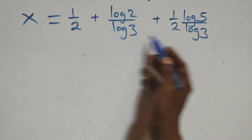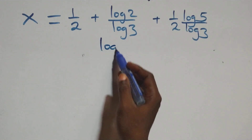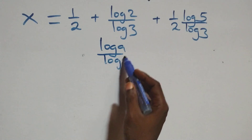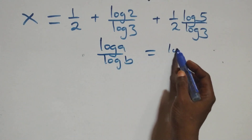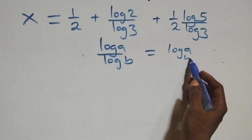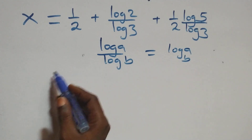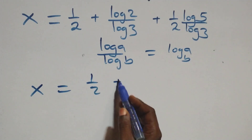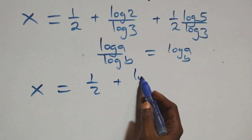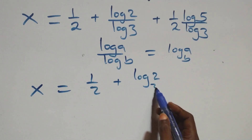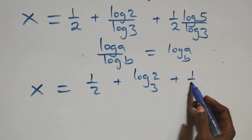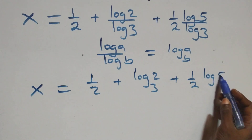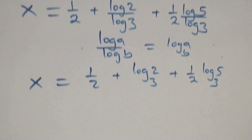Here we apply the change of base formula: log a over log b is the same thing as log a to base b. So this equation becomes x equals to 1 over 2, plus log 2 base 3, plus 1 over 2 times log 5 base 3.